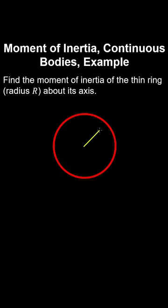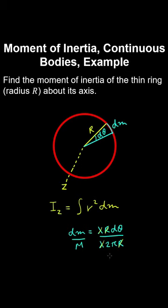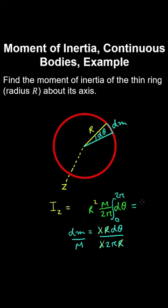Let's find the moment of inertia of a thin ring of radius r about its axis pointing out of the plane. Choosing a differential mass element as a slice at angle dθ, we write dm as the linear density times r dθ. Dividing by total mass and making cancellations, we integrate from 0 to 2π. Since the radius is constant, the constants come outside the integral, and the moment of inertia evaluates to mr².